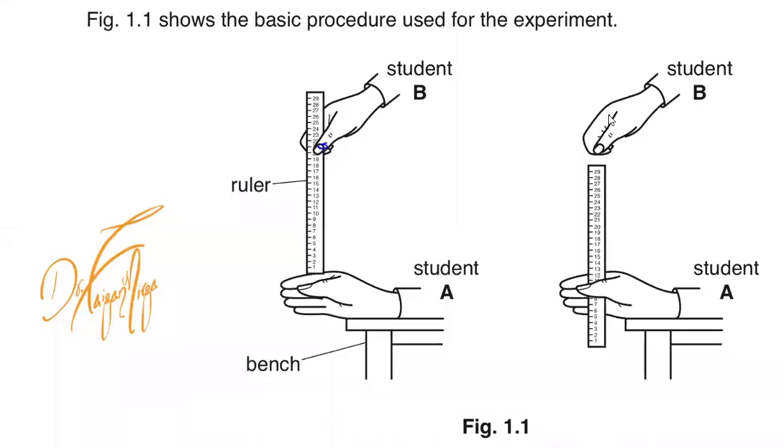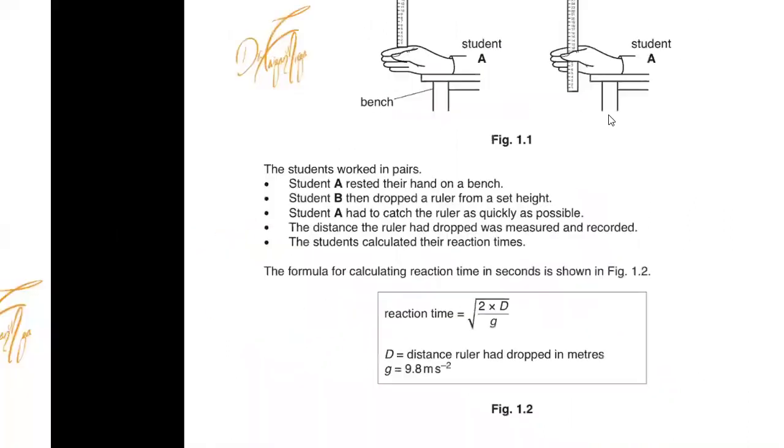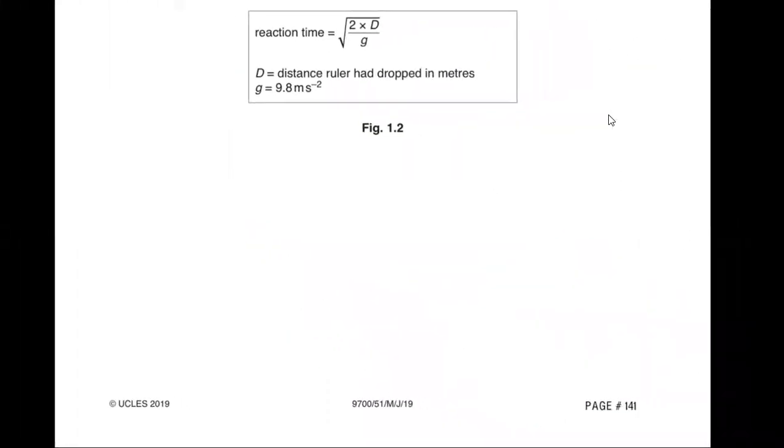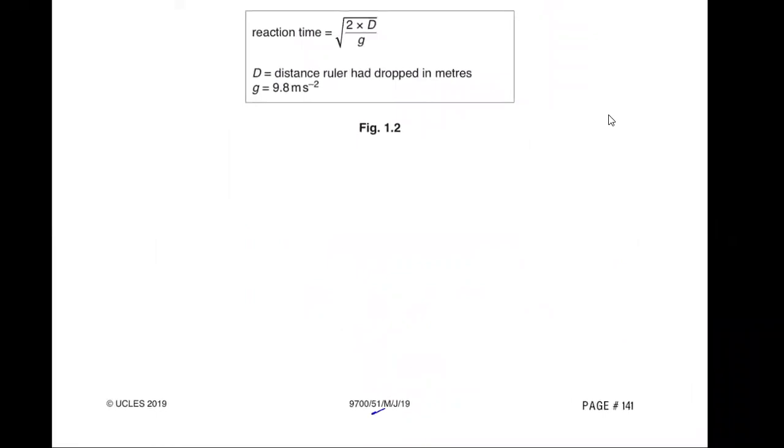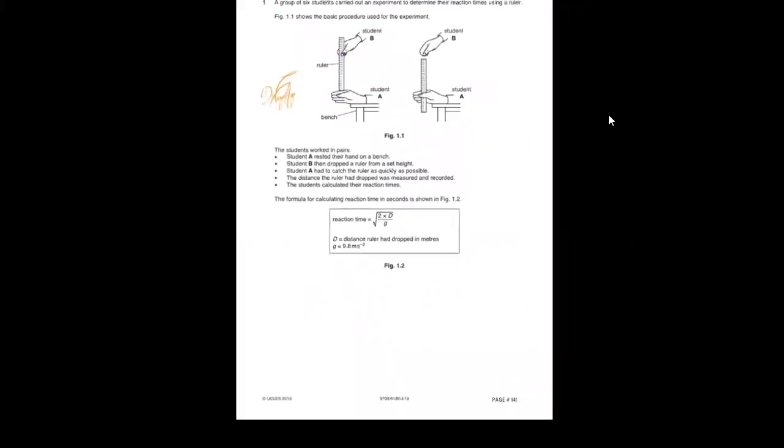Hello students, this is Dr. Fezzan Mirza. Today I'm discussing a question in which the reaction time was investigated by a group of students. This question deals with t-tests as well and categorical variables. This question came in May June 2019, the first variant of paper 5 which is 51.